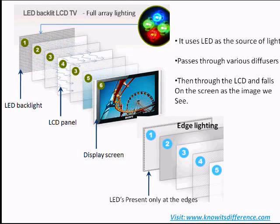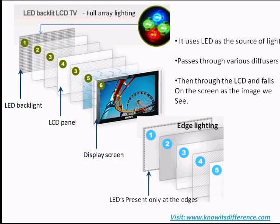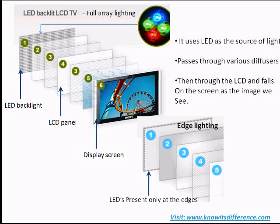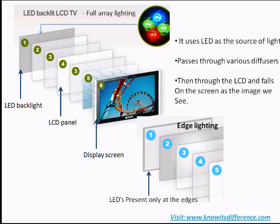Instead of using a white LED, separate LEDs for red, green, and blue are used for producing a better picture quality. There are two types of LED backlighting: one is referred to as edge lighting, and the other is called full-array lighting.